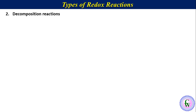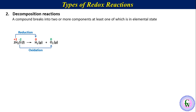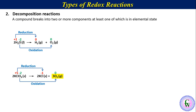Decomposition reactions. Opposite to combination reaction, in a decomposition redox reaction a compound breaks into two or more components, at least one of which is in elemental state. For example, decomposition of water into hydrogen and oxygen — both products are in elemental state. Hydrogen is reduced from plus 1 to 0, while oxygen is oxidized from minus 2 to 0. Another example: decomposition of potassium chlorate into potassium chloride and molecular oxygen, where chlorine is reduced from plus 5 to minus 1, and oxygen is oxidized from minus 2 to 0.